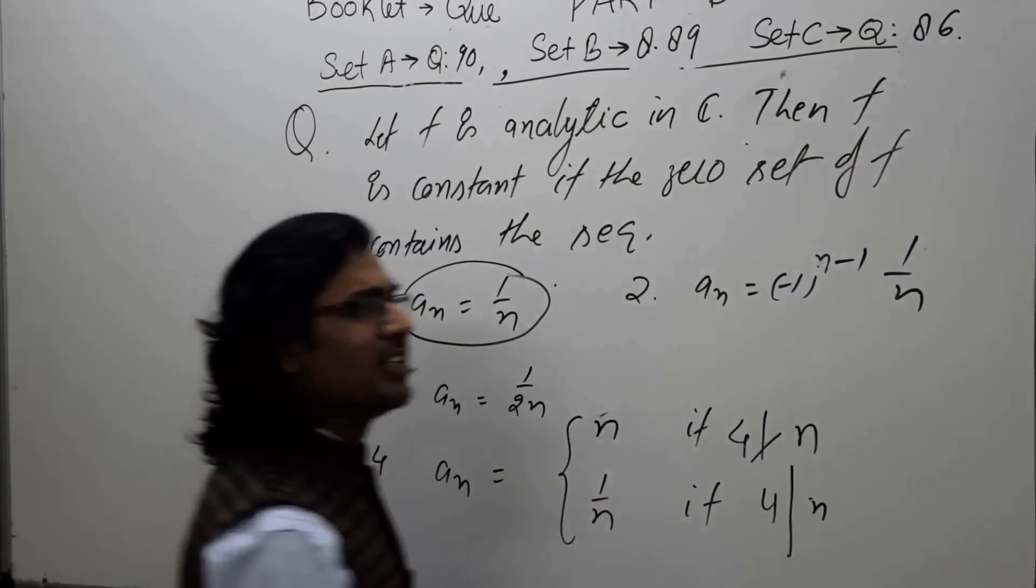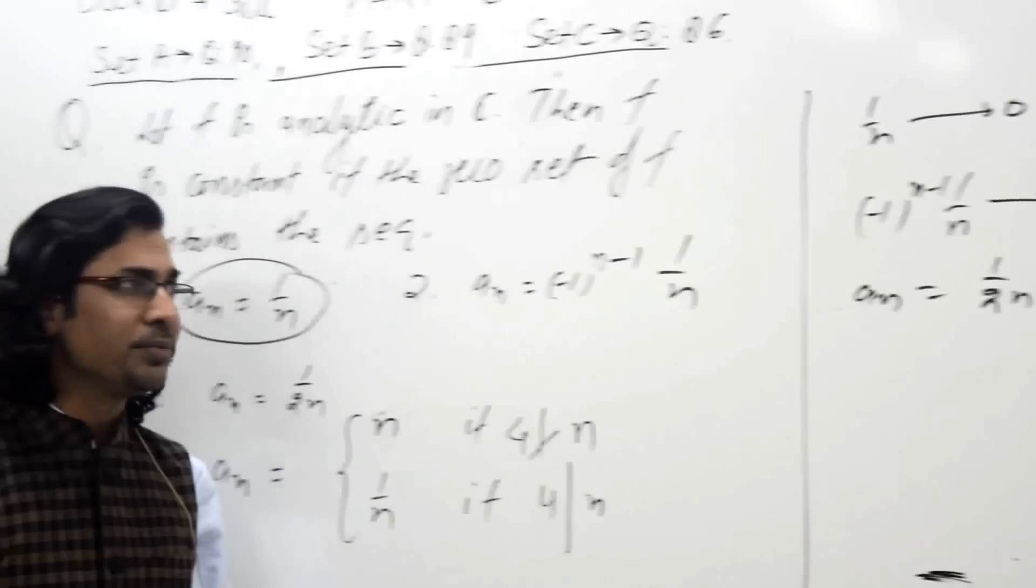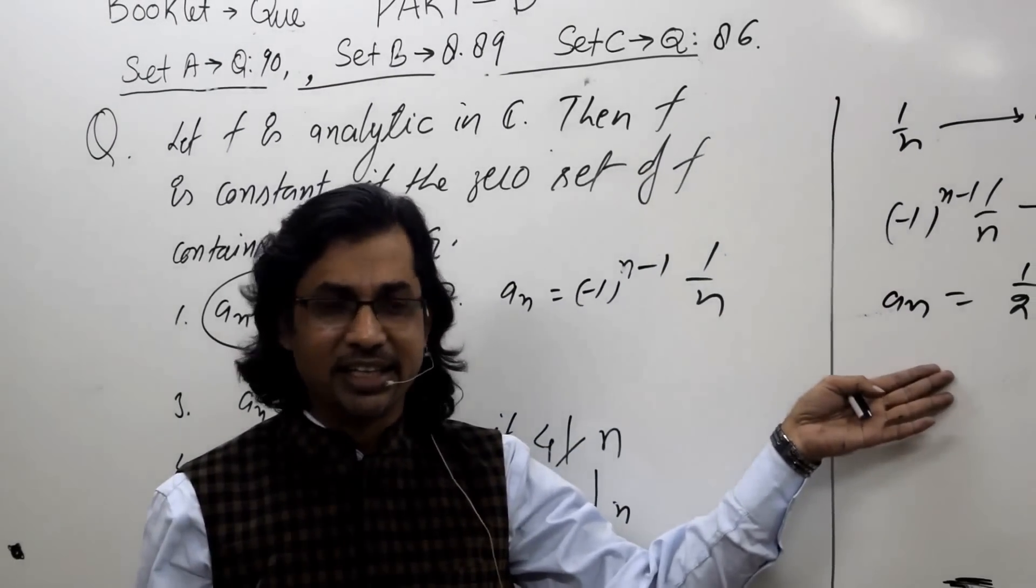Similarly, third is nothing but a_n = 1/(2n), which tends to 0. It's a subsequence of 1/n, we can think in this way also.